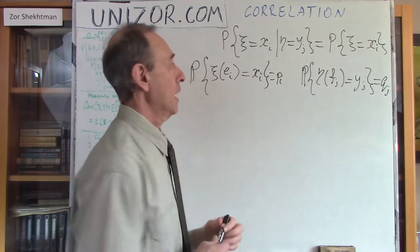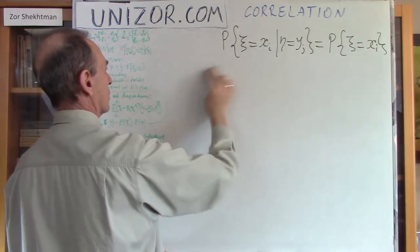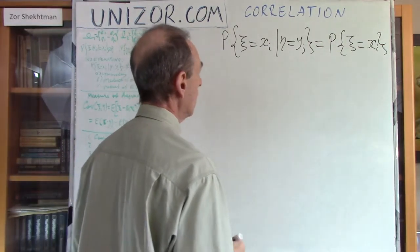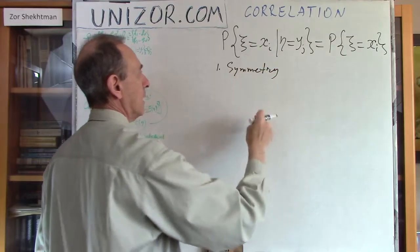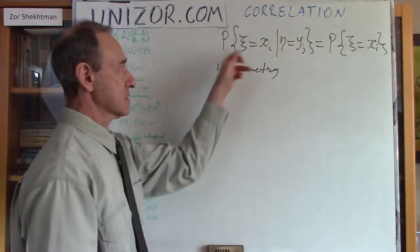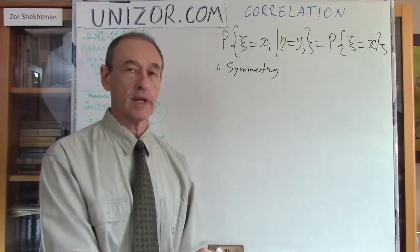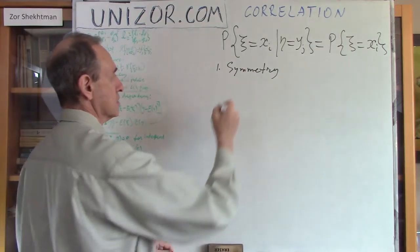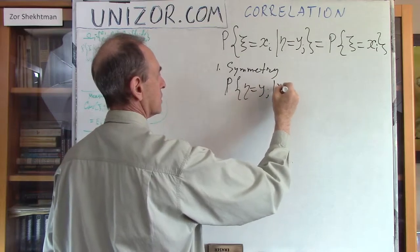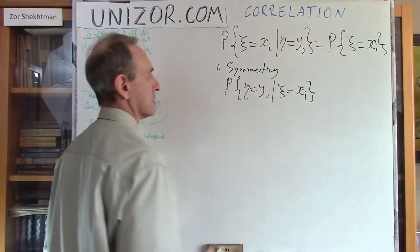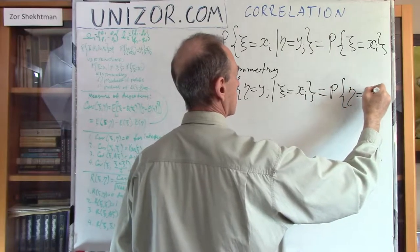Let me remind you of a couple of properties of independence which will be used in this lecture. First, there is the property of symmetry. If ξ is independent of η — and this is the definition — then η is independent of ξ. It was proven in the corresponding lecture. Basically it means that the probability of η taking value yⱼ under the condition that ξ has already taken some value xᵢ is exactly the same as the unconditional probability of η taking value yⱼ.